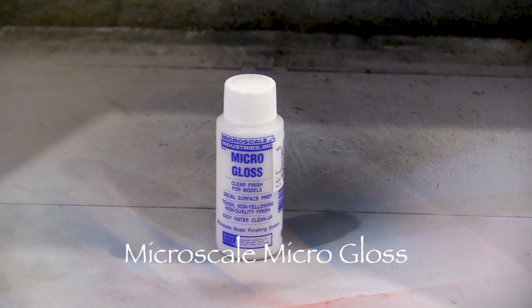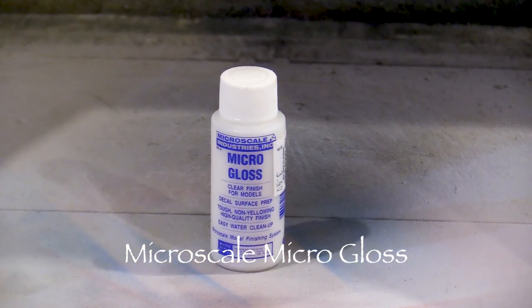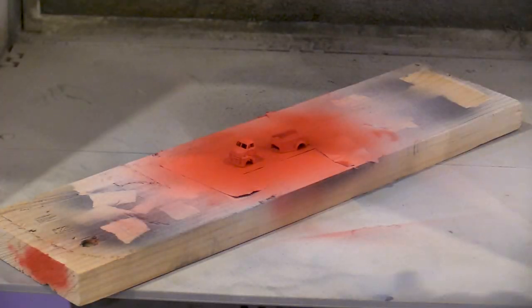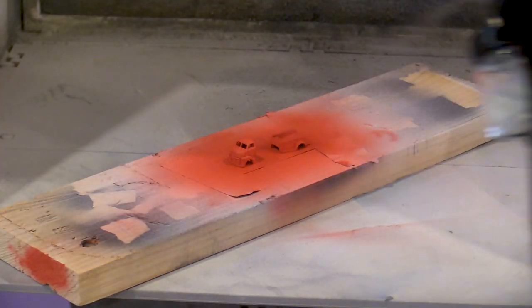Since this model has decals, after the paint has dried, I'm spraying some Microscale Micro Gloss on the body. I thinned this with Windex as well. Decals adhere better to a glossy surface.